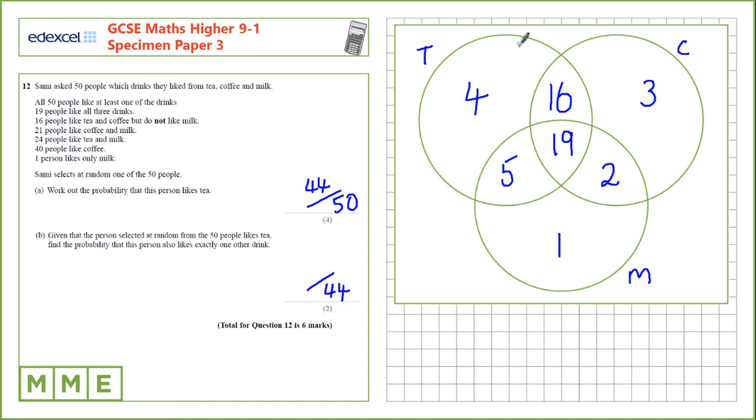Of these people that like tea, the people that like exactly one other drink are the people in here, and the people in here. The people here like all three drinks, so that's two other drinks. So 16 plus 5 is 21. Our probability is 21 over 44.